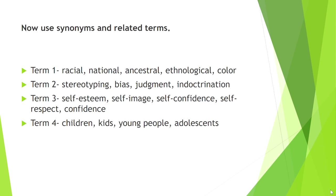Now we want to use synonyms and related terms. Let's do a little bit of brainstorming, or we can use a thesaurus. For term number one, let's think of some words that could be used in place of racial or that are very similar in meaning. Then for terms two, three, and four, we're going to do the same thing.